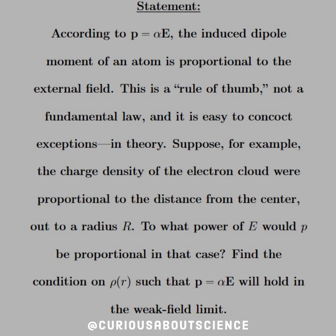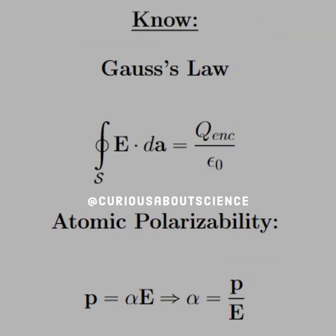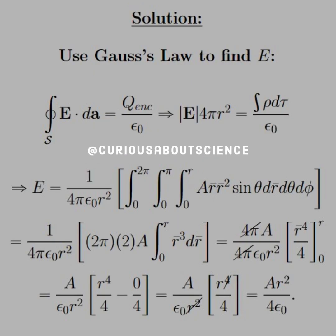Find the condition on ρ such that p = αE will hold in the weak field limit. Things to know for this problem: Gauss's law and the atomic polarizability. Similar to the last problem, we will use Gauss's law to find the external field.